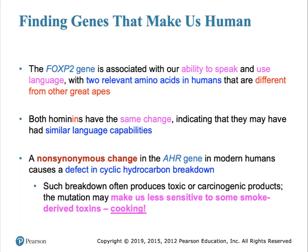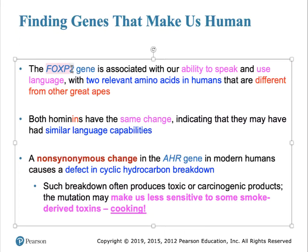Just like a forensic scientist picking apart the scene of a crime, we can now pick apart the meaning of DNA changes in genomes. For instance, the FOXP2 gene is associated with the ability to speak. Creatures with a mutation in this gene may be able to communicate differently than those without the mutation. Chimpanzees and gorillas do not have a mutation in this gene, but humans do. Remarkably, Neanderthals also appear to have a mutation in this gene — so maybe Neanderthals had the ability to speak.